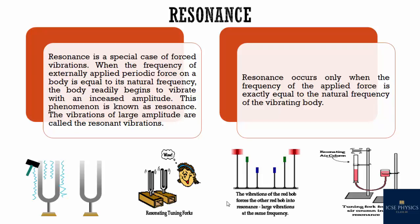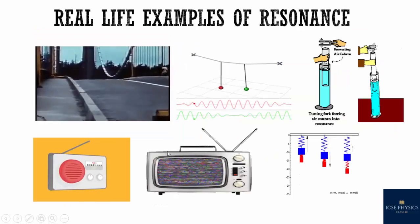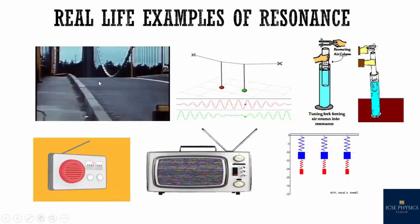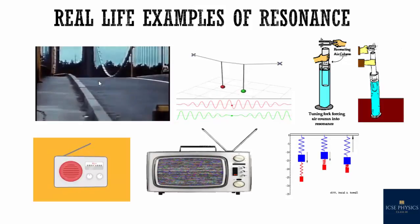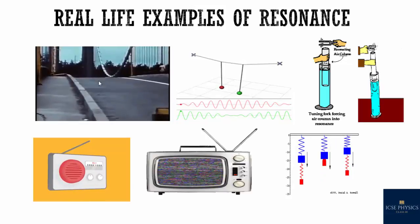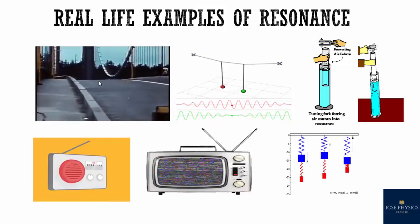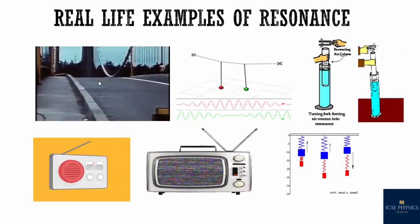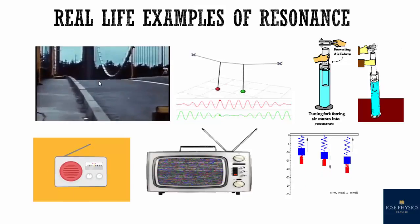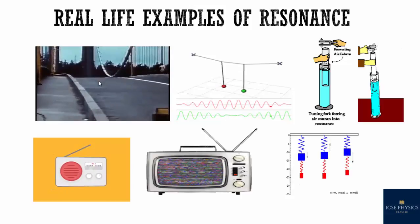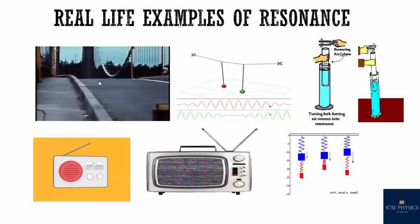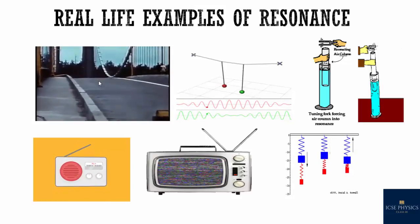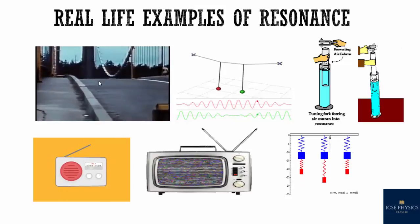There are many real-life examples of resonance. When a troop crosses a suspension bridge, soldiers are asked to break their steps. The reason is that when soldiers march in steps, each soldier exerts a periodic force in the same phase. If the natural frequency of the steps matches the natural frequency of the bridge, the bridge will vibrate with a large amplitude due to resonance and may collapse. Similarly, if two pendulums of the same length are suspended from a rubber string and one is made to vibrate, the other also starts vibrating with large amplitude in the same phase because of resonance.